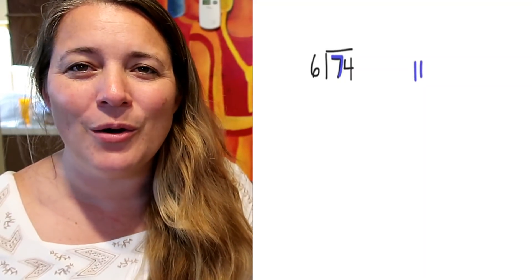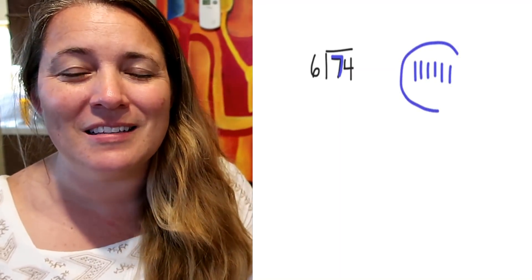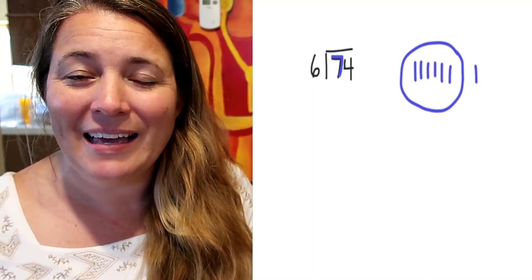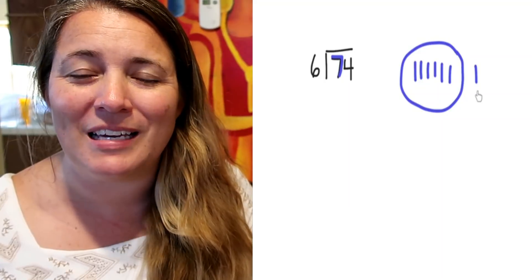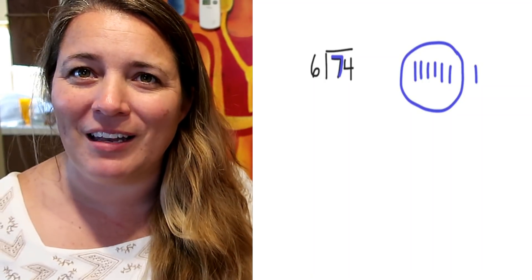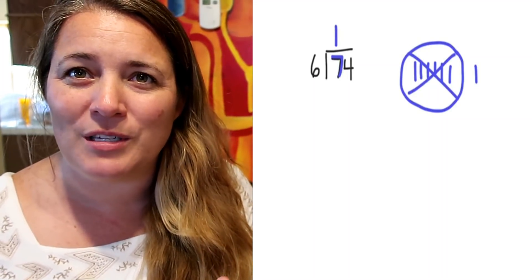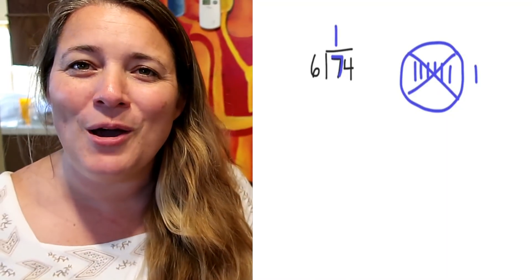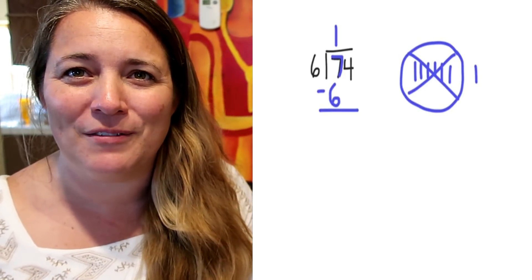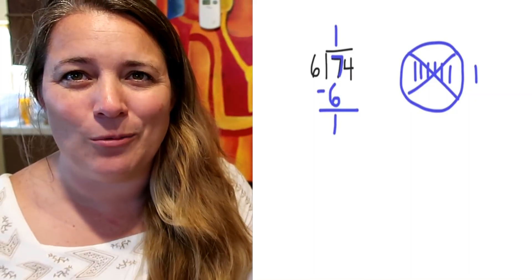Here we go: 1, 2, 3, 4, 5, 6 — stop, make a group — and 7. I can see that I have one group of 6 with one left over. So above the 7, put that one group. We're going to get rid of that group, subtract the group of 6. 7 minus 6 is 1.